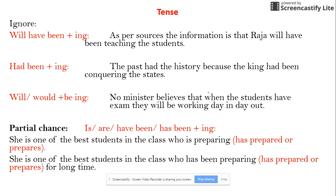First, let's look at the tenses that GMAT ignores. The first is 'will have been ing' — the future perfect continuous. Without worrying about the name, the marker is 'will have been ing.' Wherever there is 'will have been ing,' that sentence or answer choice should be eliminated. For example: 'Raja will have been teaching the students' — such sentences should be eliminated.